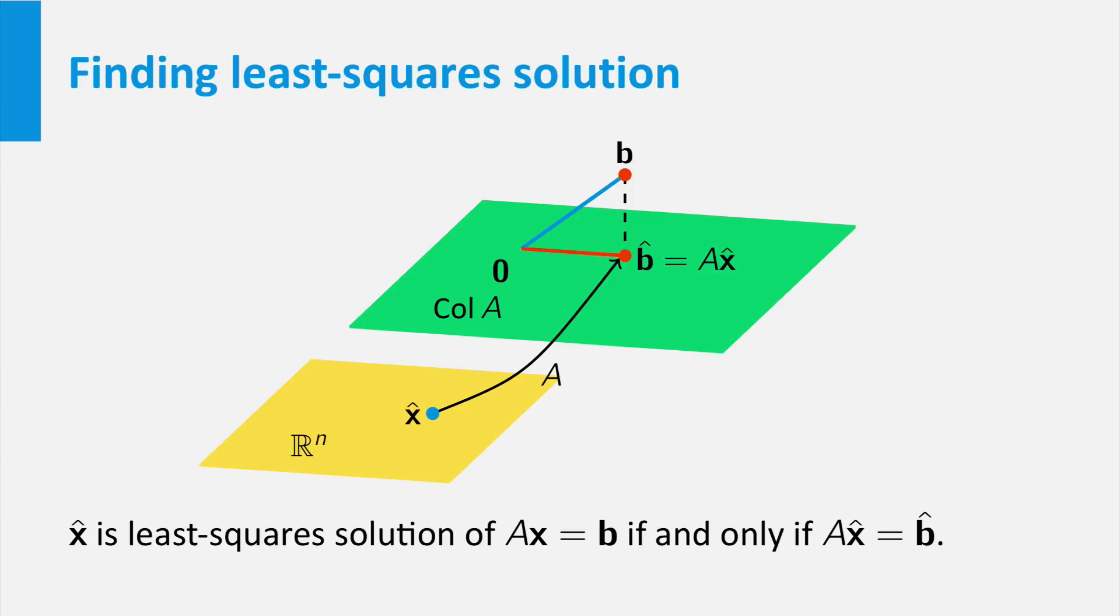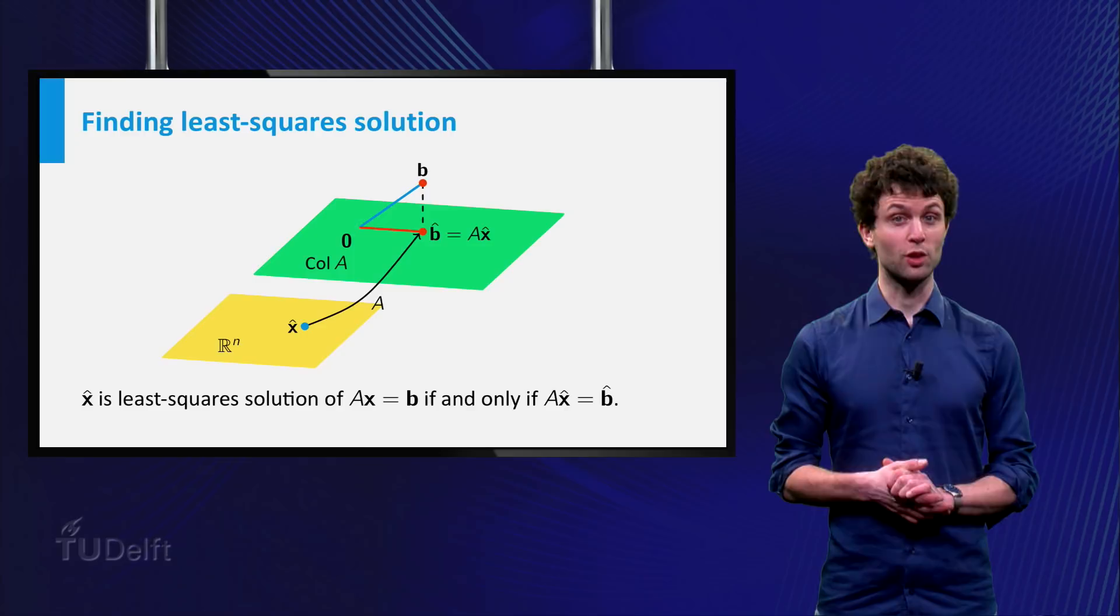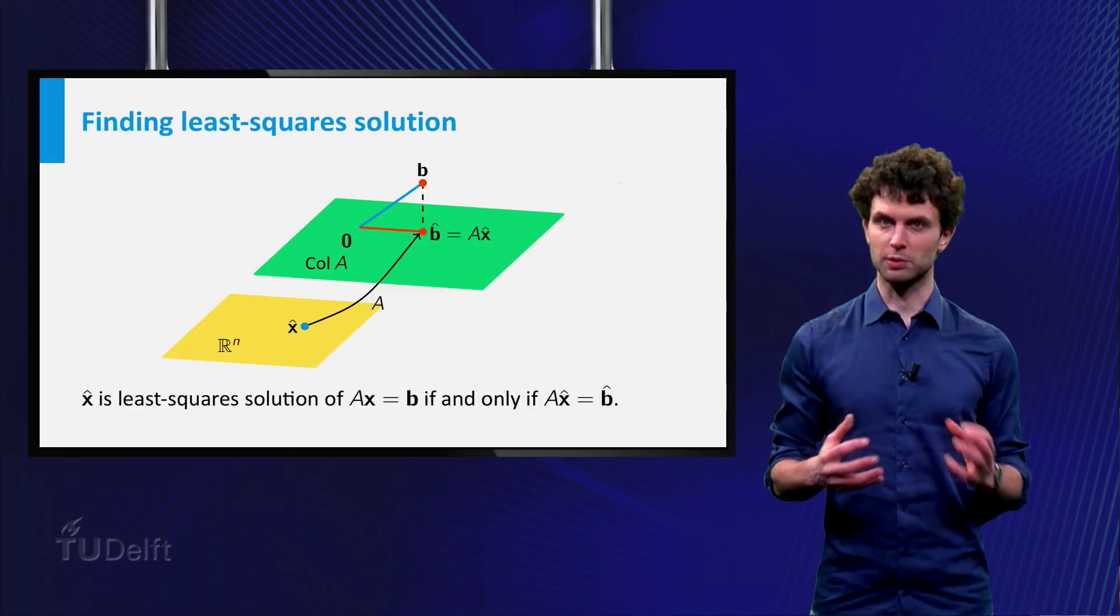In other words, the set of all least square solutions of the system Ax = b is equal to the set of solutions of the modified system Ax = b̂. Note that the modified system is always consistent because b̂ lies in the column space of A.